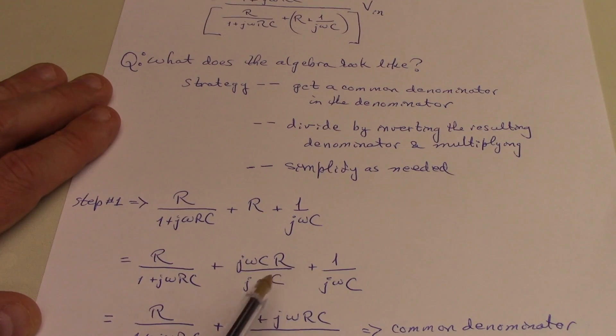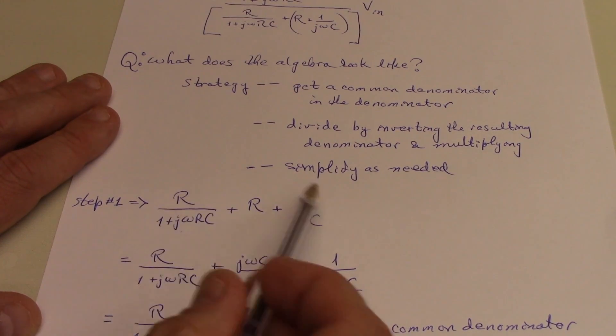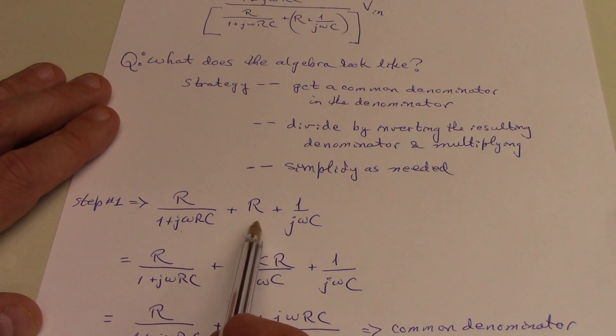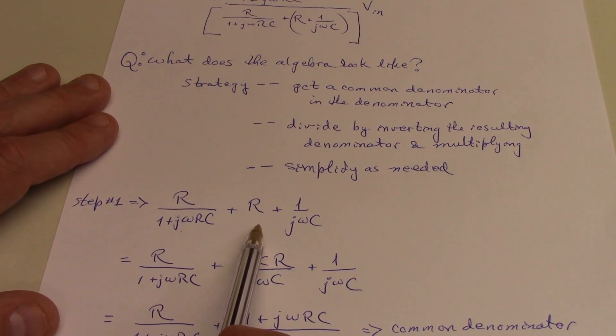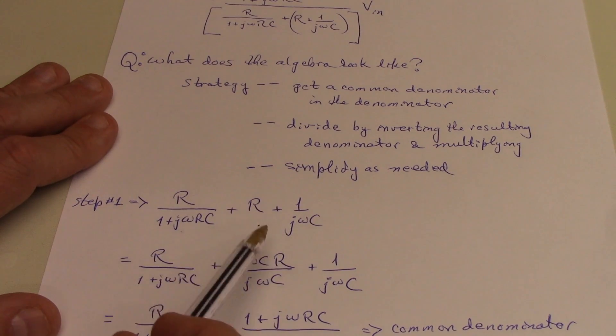The first step in finding a common denominator of this whole expression would be to find a common denominator for these two components of that expression. And that's pretty easy. Remember, I can multiply anything by 1. Anything times 1 is just that anything.